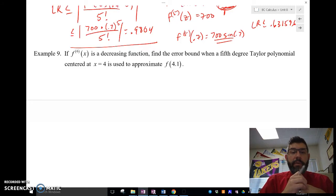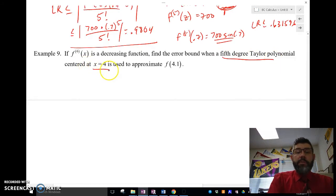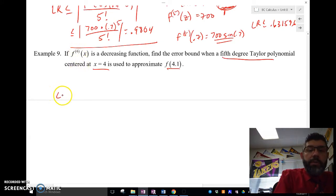Let's take a look at this last example here. If the sixth derivative of x is a decreasing function, find the error bound when a fifth degree Taylor polynomial centered at x equals 4 is used to approximate f of 4.1. So, we know that we've done a fifth degree estimation. So, we're going to use Lagrange remainder to approximate the error. So, we're finding the error. That's going to be, if we use a fifth degree, then we're going to do f sixth prime of z.